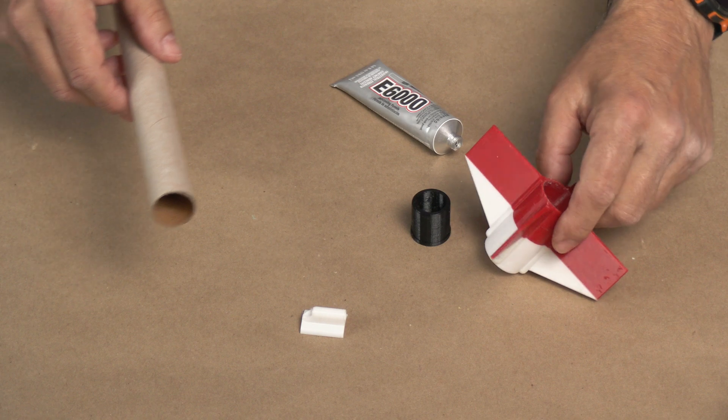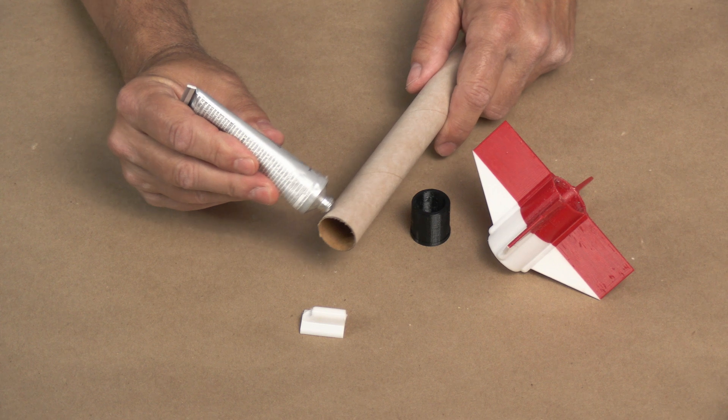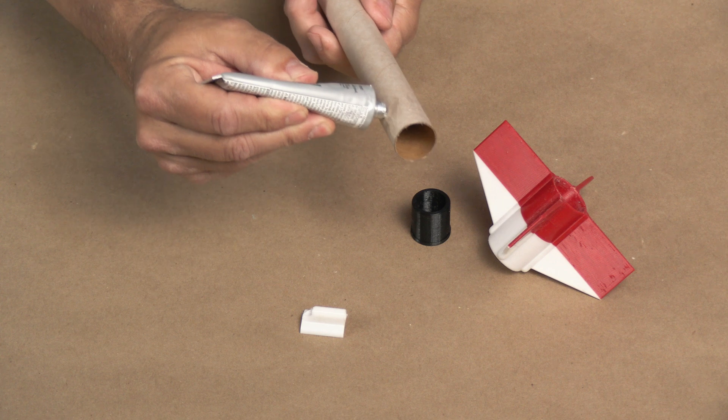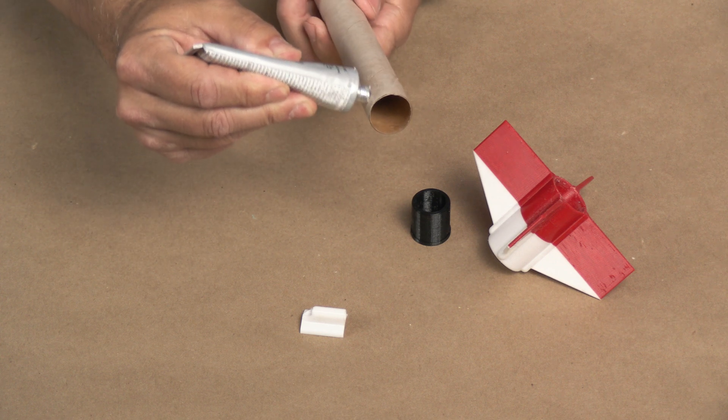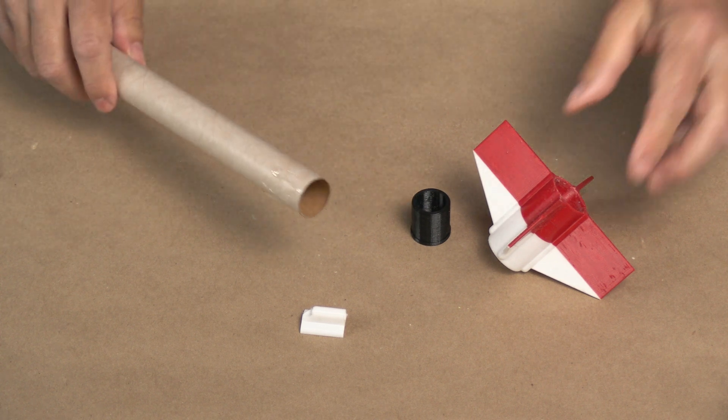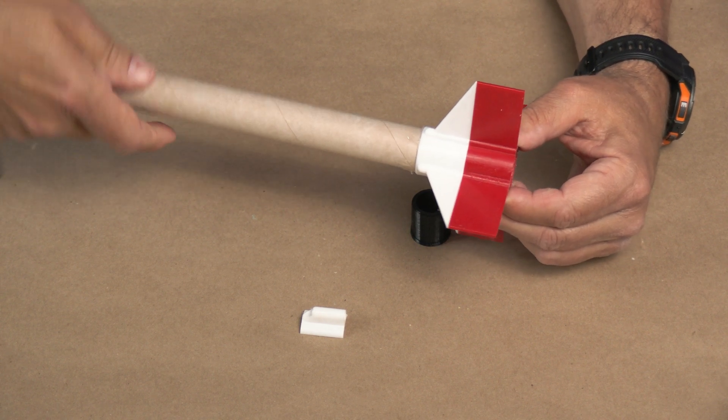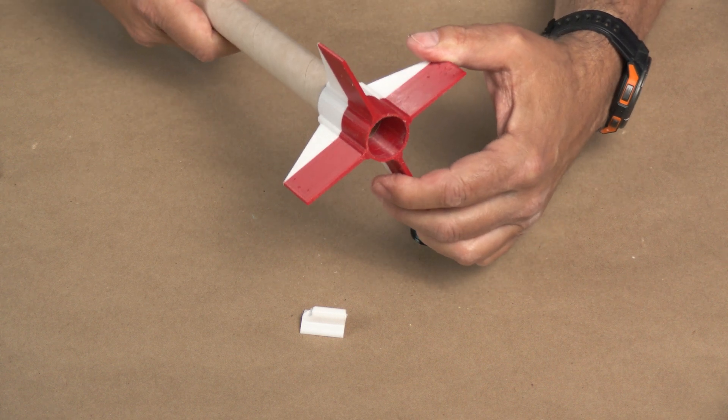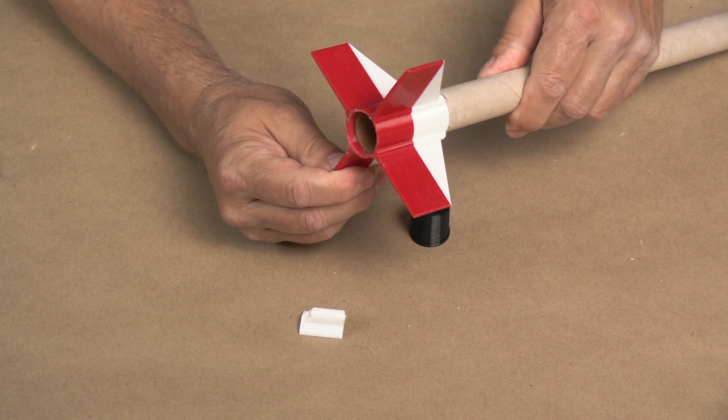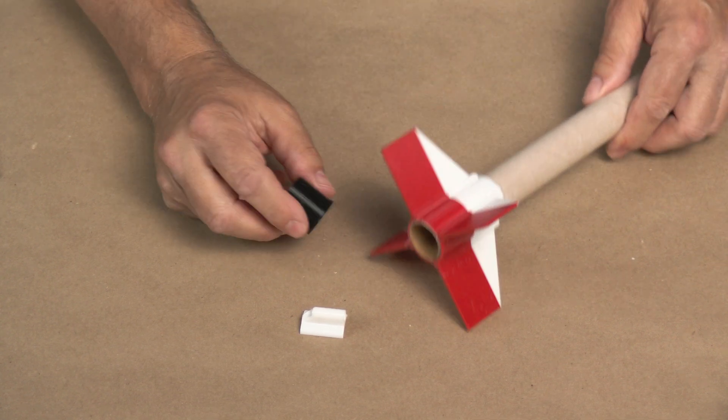So what I'm going to do is take my E6000 on the cut end and just make some squiggly lines. It doesn't take a lot of glue. Like that. And then I twist on the fin can, I just kind of slowly twist it until I can see the end. Let me turn it around here so I can see it. I keep twisting until I can see the end of the body tube there. Now once that's complete...